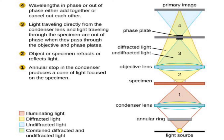It is also widely used to study eukaryotic cells. Light traveling directly from the condenser lens and light traveling through the specimen are out of phase. The diffracted light and undiffracted light pass through the objective and phase plate — diffracted light through the phase plate and undiffracted light through the phase ring.